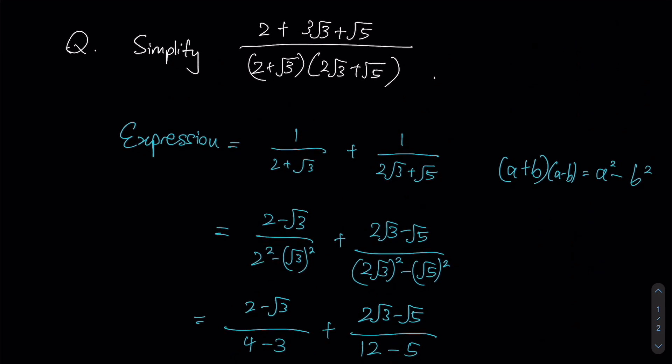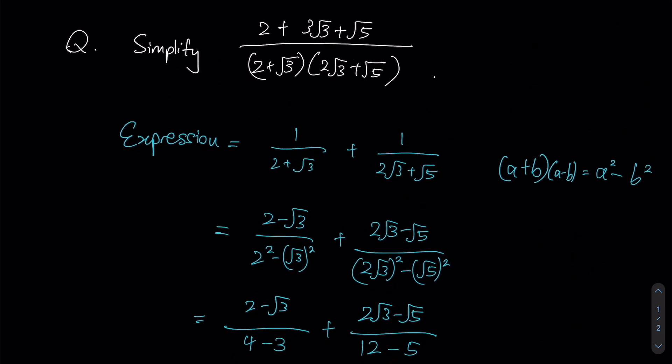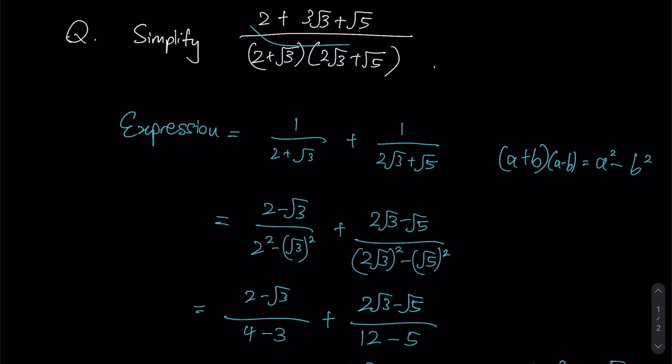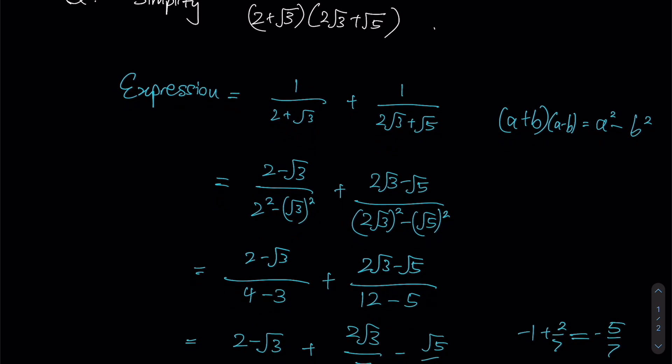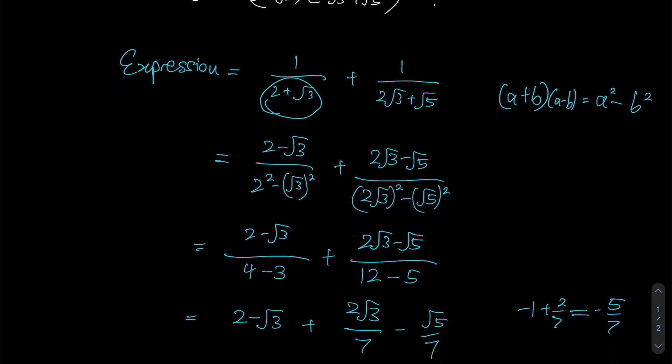So from the top, first recognize that this is actually just the sum of these two expressions, which means that we could split this original expression into two separate fractions. But now, at this stage is when we realize that we have to start to rationalize both of our denominators, seeing as there are square roots within them.